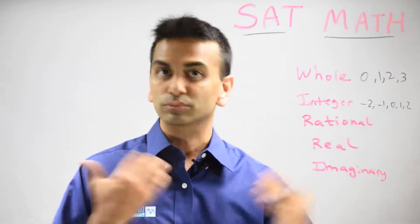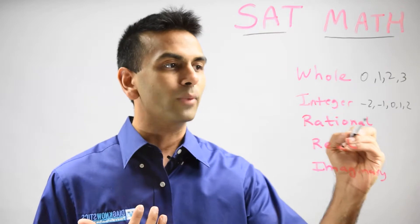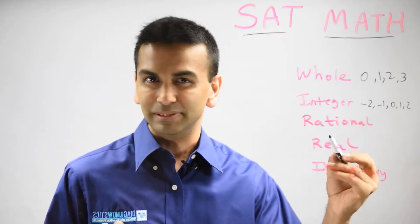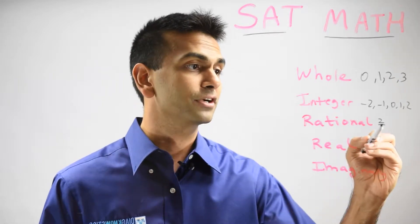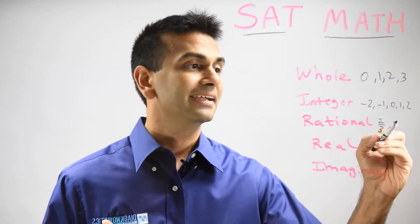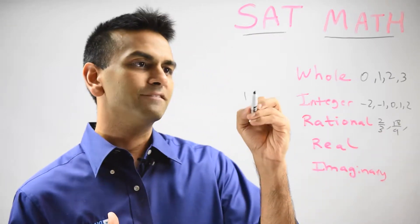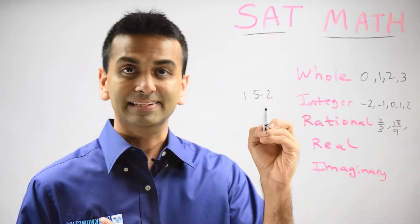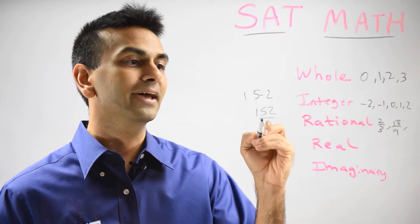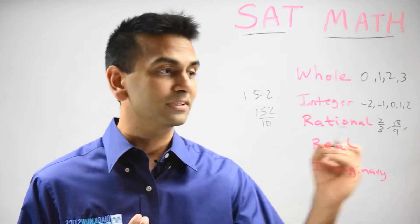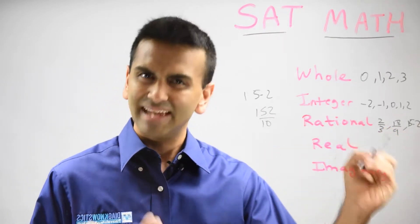Rational numbers—here's where it sounds like we're already getting every number you could think of. A rational number is any number that can be written as an integer over an integer, kind of like fractions. Two-thirds is a rational number. 18 ninths is a rational number. Even something like 15.2 is a rational number because it can be written 152 over 10. So even 15.2 is technically a rational number because it can be written as a fraction.